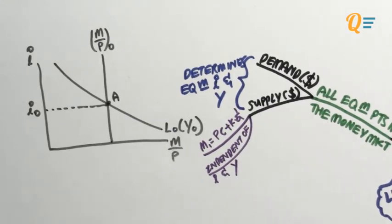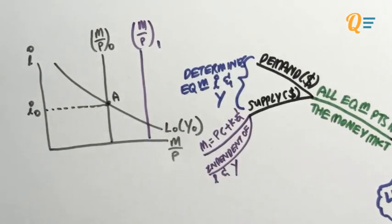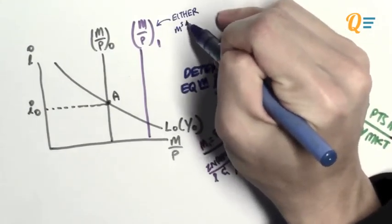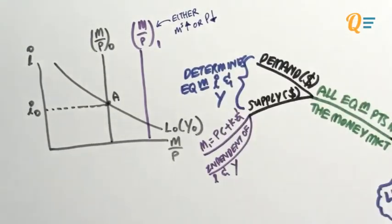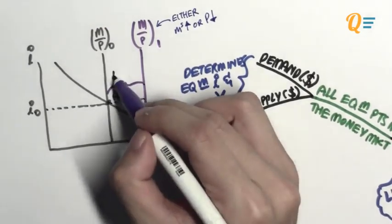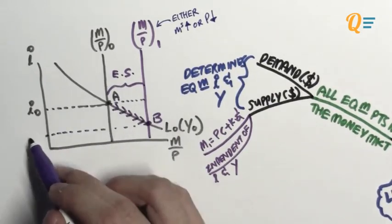Let's look at the dynamics of this money market diagram. If the real money supply were to increase to M over P1 — due to maybe an increase in the nominal money supply or a decrease in the general price level — and if the interest rates did not change, you have an excess supply of money. So interest rates will have to fall to point B so that the market clears.